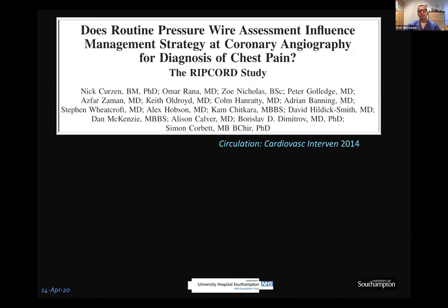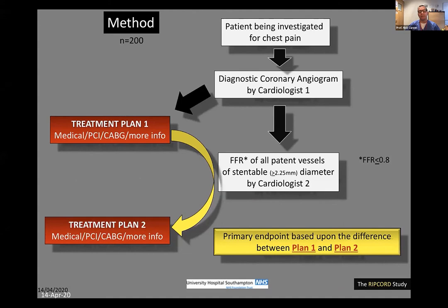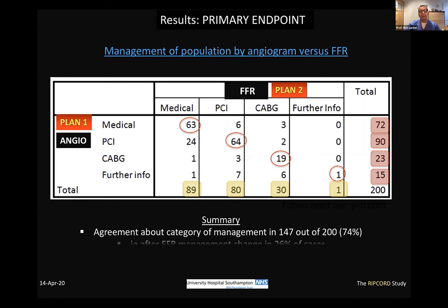The original RIPCORD study — designed as a pilot with 200 patients — tested the hypothesis of how different management would be if FFR was measured in every vessel versus using angiogram alone. The primary endpoint was the difference between the angiogram-based plan and the FFR-based plan. In a third of cases the treatment was changed — in all different directions: some medical patients needed revascularization, some PCI patients were changed to medical therapy, some bypass surgery patients were changed to medical therapy. Overall it led to a change in management in over a quarter of cases.